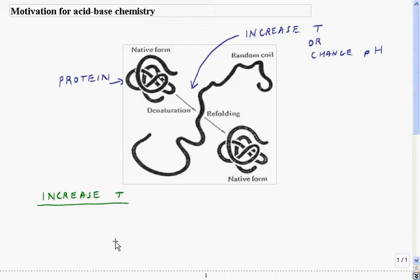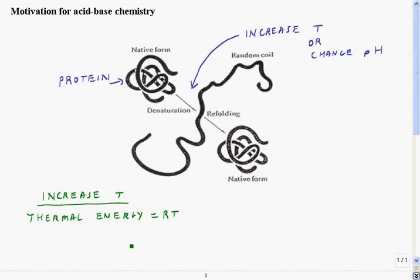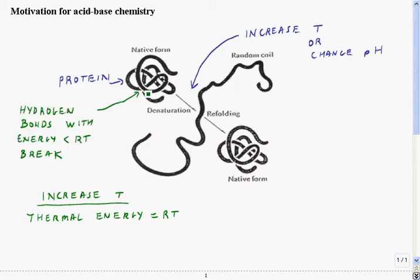We'll start by considering how an increase in temperature can denature the protein. As we heat up the system, we're giving it thermal energy of magnitude RT. This thermal energy is random energy of the protein, which is vibrating away. If we look at this 3D structure, it's held together by weak bonds — hydrogen bonds and other types of bonds — and those with energy less than RT get broken. The thermal energy is vibrating the system around, and any bonds weaker than RT will get broken, so as we heat the system up, it will denature.